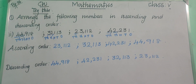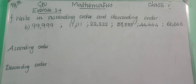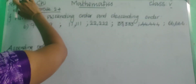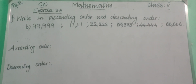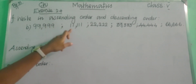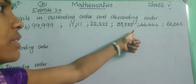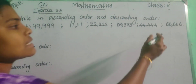Copy this in your classwork notebook — pause the video and write. After completing those two questions, let us write exercise 2.4 on page number 37. The question is: write in ascending order and descending order. The numbers given are 99,999, 11,111, 22,222, 33,333, 44,444 and 66,666.